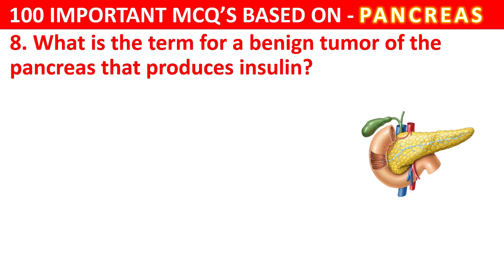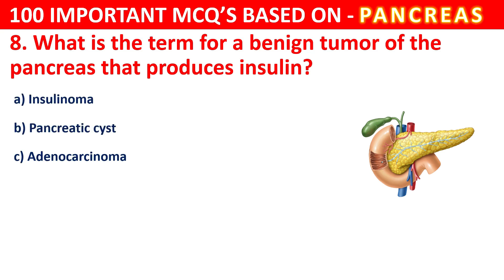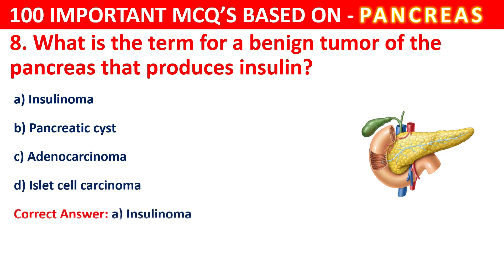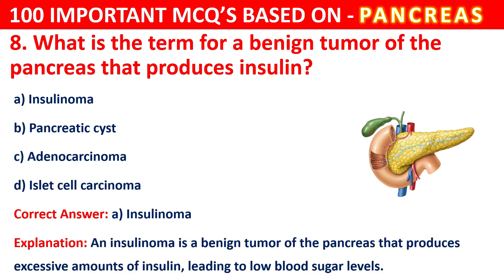Question 8. What is the term for a benign tumor of the pancreas that produces insulin? Your options are Insulinoma, Pancreatic cyst, Adenocarcinoma, or Islet cell carcinoma. The correct answer is A, that is Insulinoma. An Insulinoma is a benign tumor of the pancreas that produces an excessive amount of insulin, leading to low blood sugar levels.